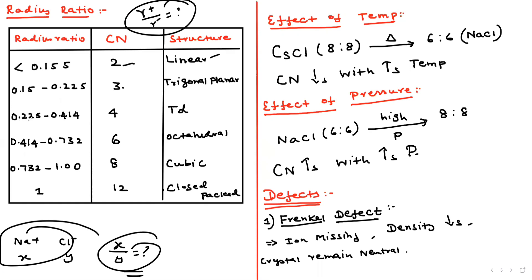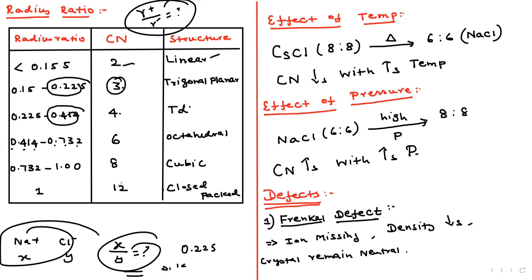The radius ratio rules for coordination numbers: r⁺/r⁻ from 0.155–0.225 gives coordination number 3 (triangular); 0.225–0.414 gives coordination number 4 (tetrahedral); 0.414–0.732 gives coordination number 6 (octahedral); 0.732–1.0 gives coordination number 8 (cubic). We must memorize these values.